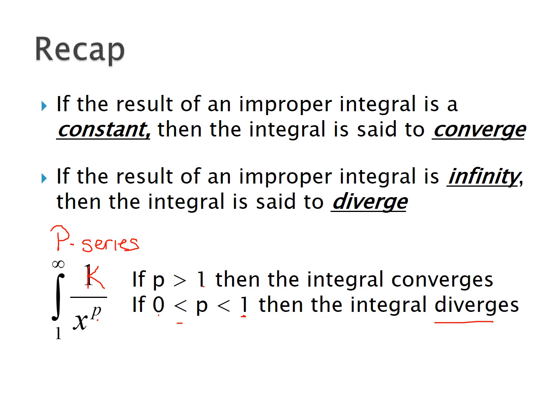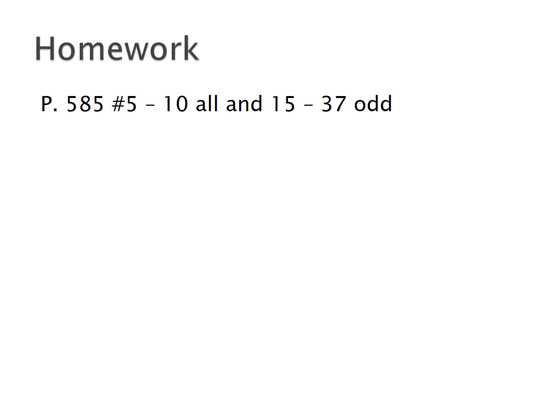To recap: if the result of an improper integral is a constant, the integral converges. If the result is infinity, it diverges. For a p-series integrated from a constant to infinity: if p > 1, it converges; if 0 < p ≤ 1, it diverges. Your homework assignment is listed — some problems you may not be able to complete yet since we're splitting this over two days. Try what you can and we'll discuss the rest tomorrow. Have a good evening.